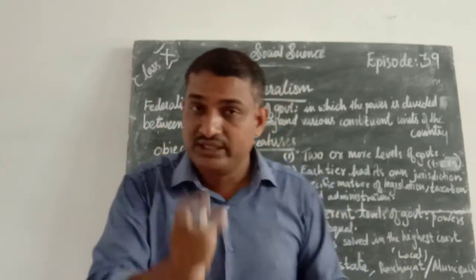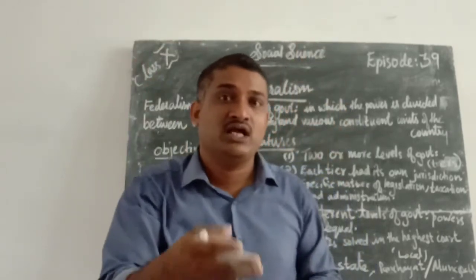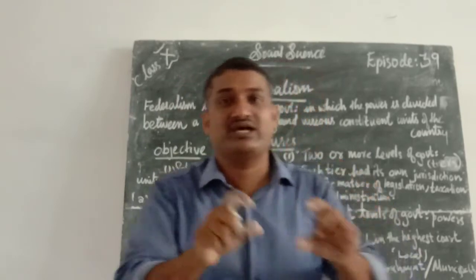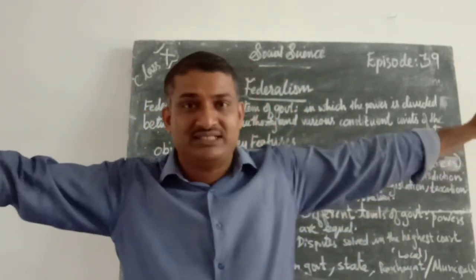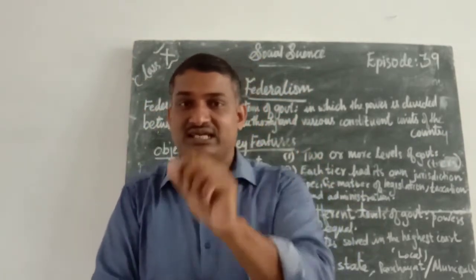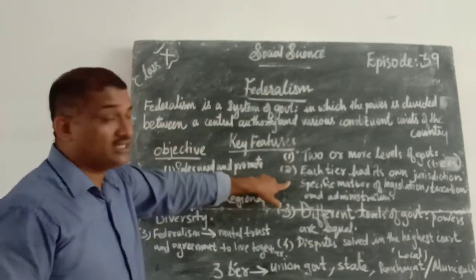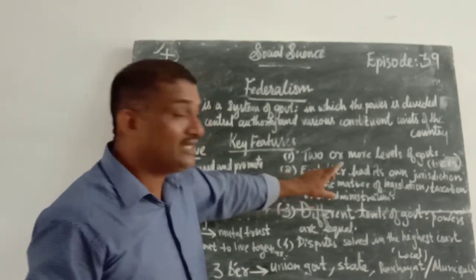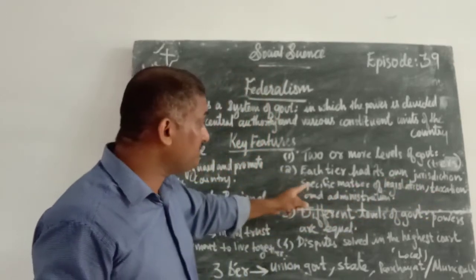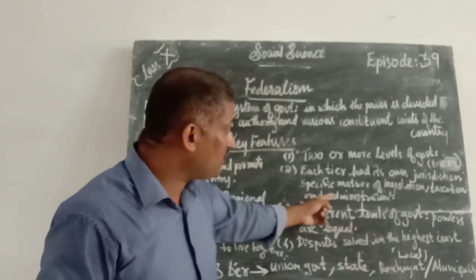In federalism, the power is equally shared. Nobody is superior, nobody is inferior. One level is not superior, one level is not inferior. Independent powers are enjoyed in these three levels — three tiers. Each tier has its own jurisdiction and specific matters of legislation, taxation, and administration. Nobody can question the power of legislation, taxation, and administration.